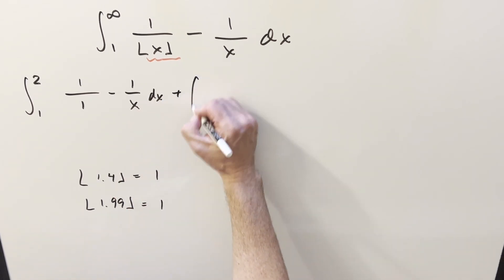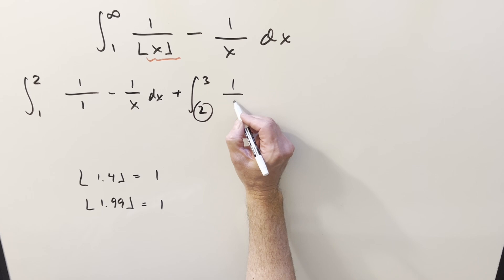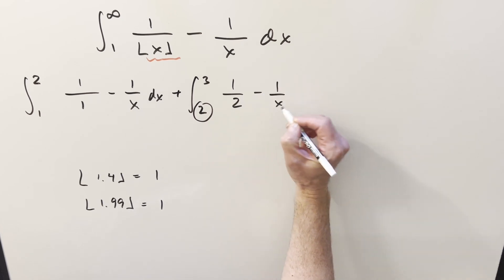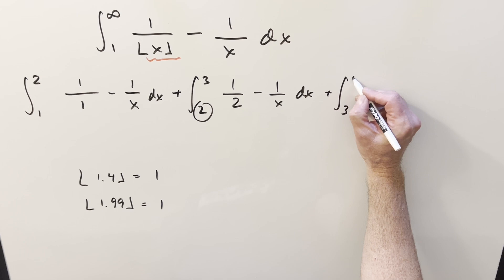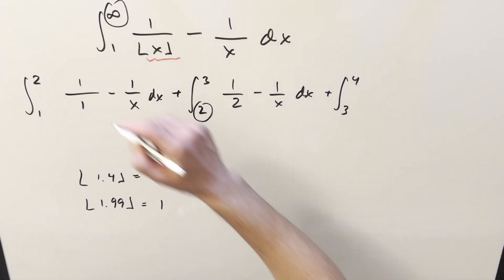And then doing another one, we're going to be integrating from 2 to 3. Then in this range, everything's going to get rounded down to this value 2. So this is going to become 1 over 2 minus 1 over x. And this is just going to go, we have to just keep going on and on like this all the way to our upper bound of infinity on it.